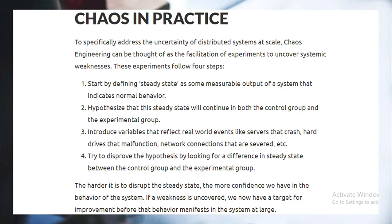Fourth, try to disprove the hypothesis by looking for a difference in the steady state between the control group and the experimental group. The harder it is to disturb the steady state, the more confidence you will have in the behavior of the system. If with chaos testing nothing gets broken, we'll have more confidence in our application. If a weakness is uncovered, we now have a target for improvement before that behavior manifests in the system at large.